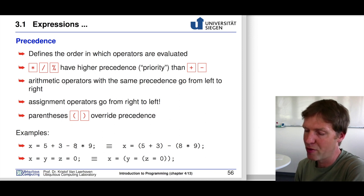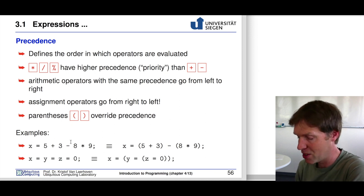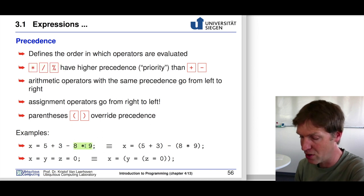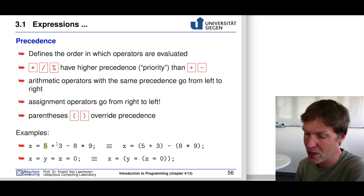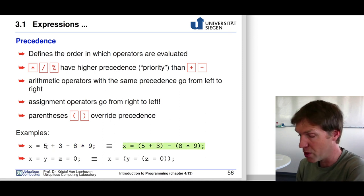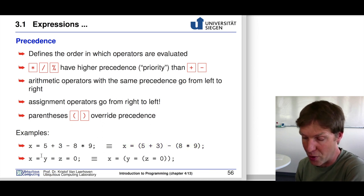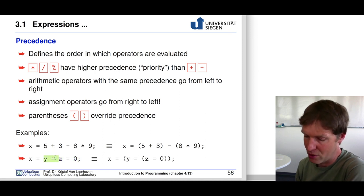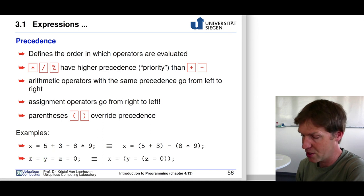For example, x equals 5 plus 3 minus 8 times 9 — multiplication has precedence, so 8 times 9 is executed first, and then we go left to right: 5 plus 3 minus the result of 8 times 9. For chained assignments, we go from right to left, so x equals y equals z equals 0 first assigns 0 to z, then to y, then to x.